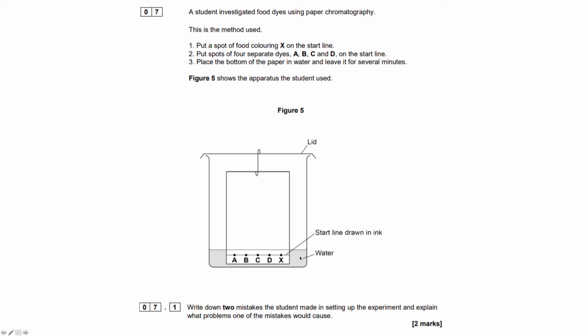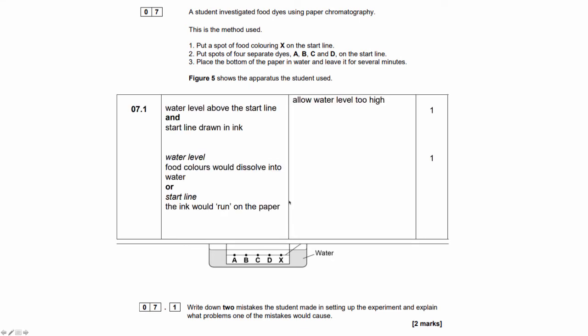And as you can see from the diagram, the start line is actually in the water line. And that shouldn't be the case. The start line should be beneath the water line because otherwise it's going to run in all directions. Whereas if it's above the water line, the water will draw it up the paper and therefore the spot will travel in one direction. We can also notice that the start lines are drawn in ink. And if that ink is soluble in water, the ink will actually smudge and cause spots as well.